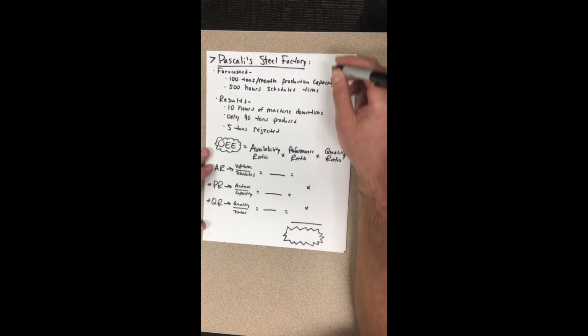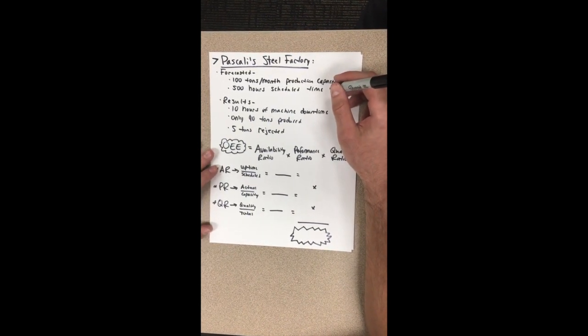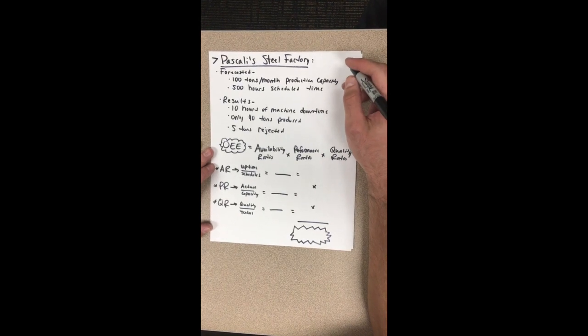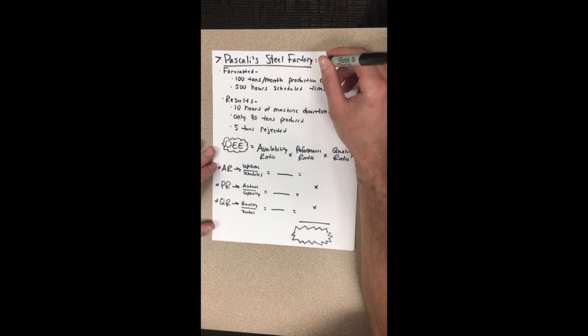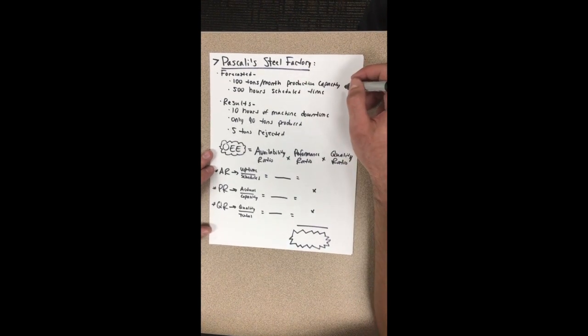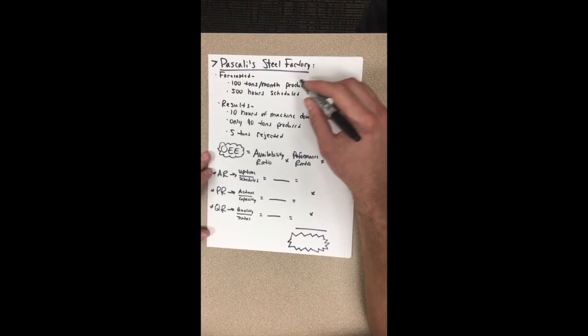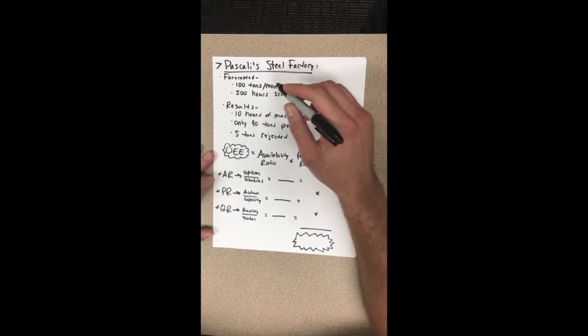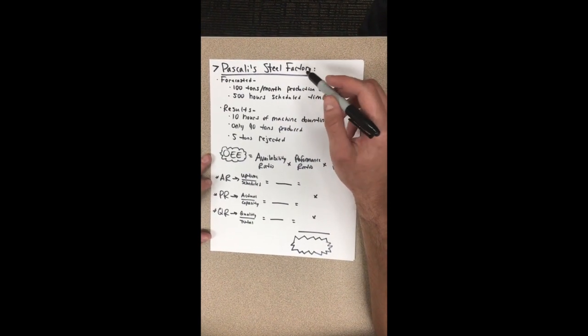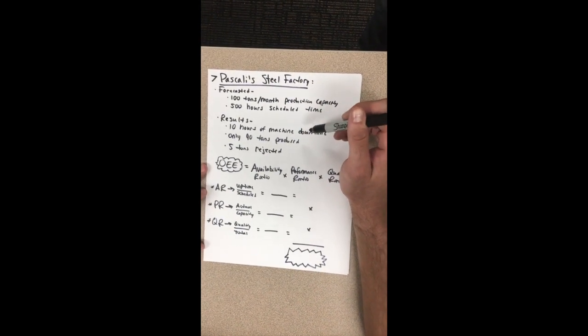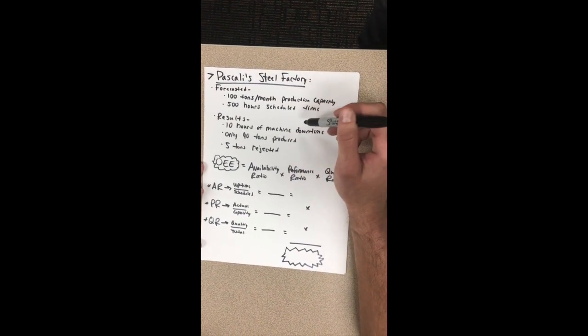So now we're in the teacher's view where I'm going to show you how to calculate overall equipment effectiveness by hand. Our example is going to include Piscali Steel Factory. Over the last 12 months of production, these numbers have been averaged. For this month, it was forecasted that Piscali Steel Factory could produce 100 tons of capacity, running at 500 hours of scheduled time.